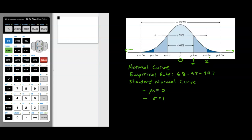So this would be a z-score of two, this would be a z-score of one. On the left side, you'd have a z-score of negative one and a z-score of negative two. Positive z-scores are on the right, negative z-scores are on the left. Z-scores are something we use in statistics quite often for describing how extreme certain data values are.